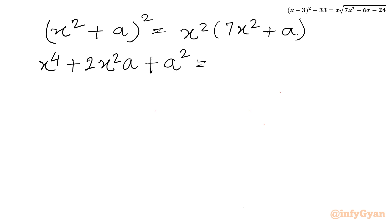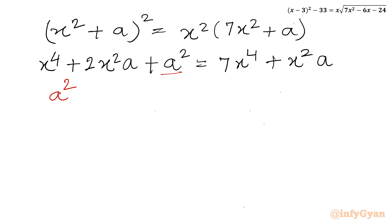Now I will take all the terms to the left hand side and frame a quadratic equation in a. After simplification: a squared plus 2x squared a minus x squared a, and then x to the power 4 minus 7x to the power 4, which gives minus 6x to the power 4, equal to zero. This is a quadratic equation in a.